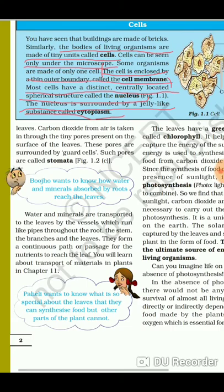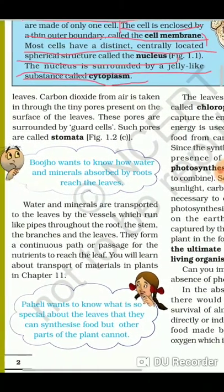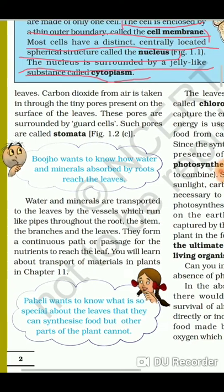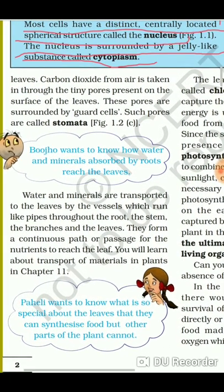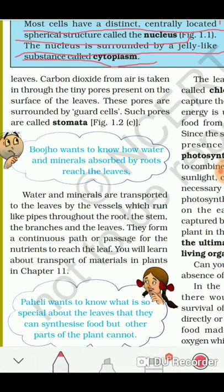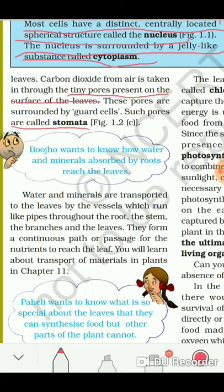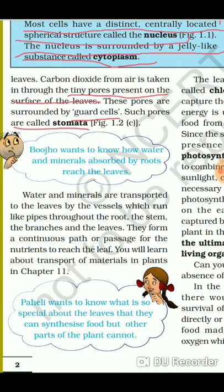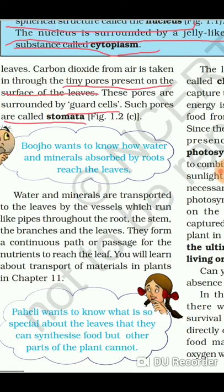Carbon dioxide from air is taken in through tiny pores present on the surface of leaves. These pores are surrounded by guard cells — such pores are called stomata. The tiny pores present on the surface of the leaf are called stomata. Guard cells are the cells which regulate the opening of the stomata to take in carbon dioxide.